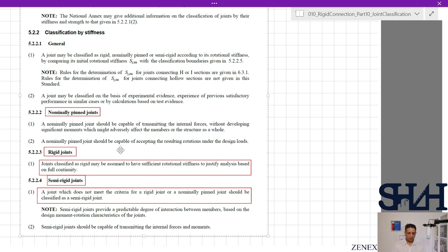Rigid joints: joints classified as rigid may be assumed to have sufficient rotational stiffness to justify analyses based on full continuity. To understand this better, if we go through one of my videos in the buckling analyses playlist, you will find the minimum stiffness that you would require to change the behavior of the structure or of the beam.